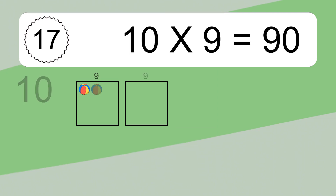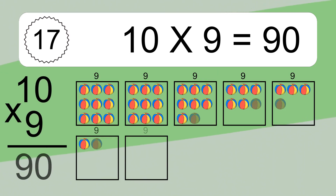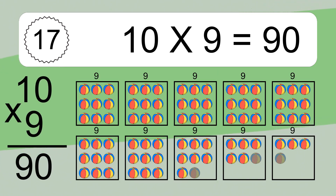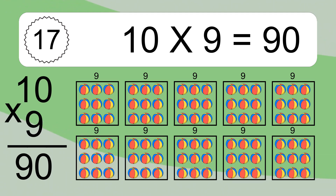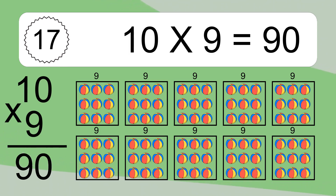10 times 9 equals what? 10 times 9 equals 90. We have 10 boxes, and each box has 9 colorful balls inside. If you count all the balls in all the boxes together, you will have 10 times 9 balls. This equals 90 balls.